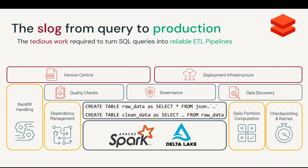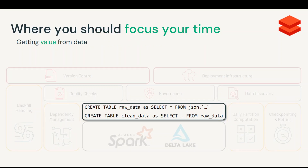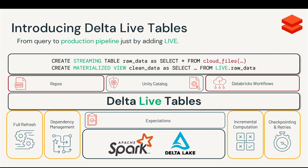With all of these components being managed by you, you get deviated from the main work. Your main work is curating your bronze, silver, and gold layers accurately. But instead of focusing on that, your time is spent on quality checks, building lineage, and everything else. Delta Live Table pipelines actually help you here — your time should be focused on getting value from the data, building SQL queries, applying business logic.